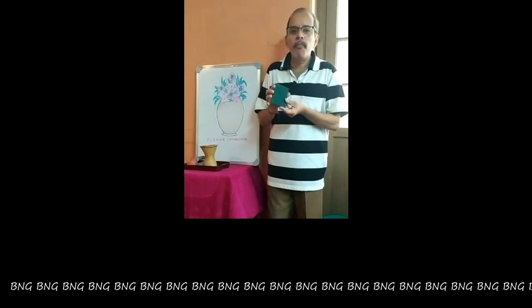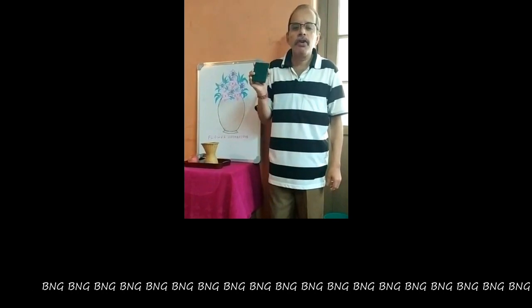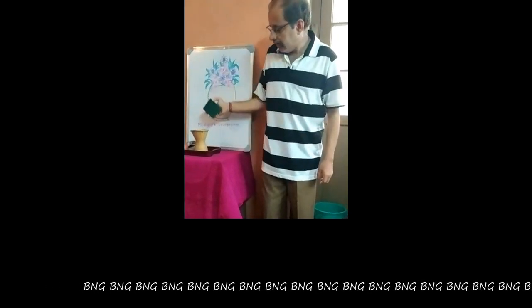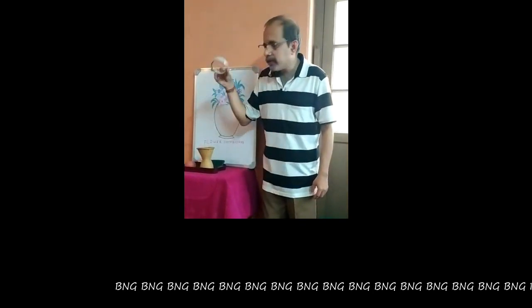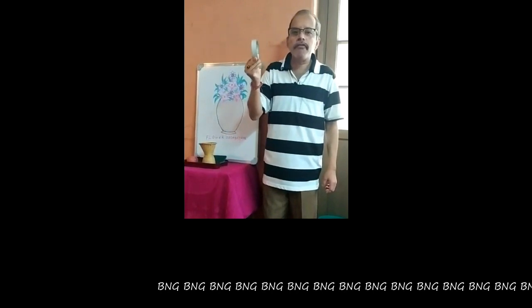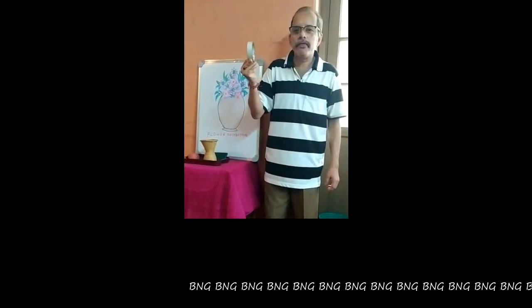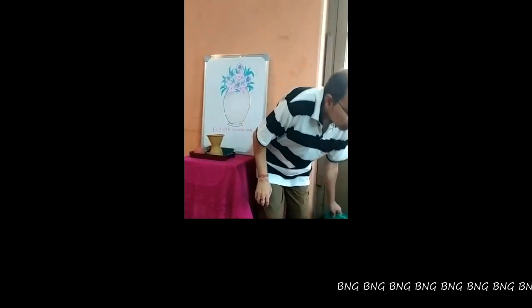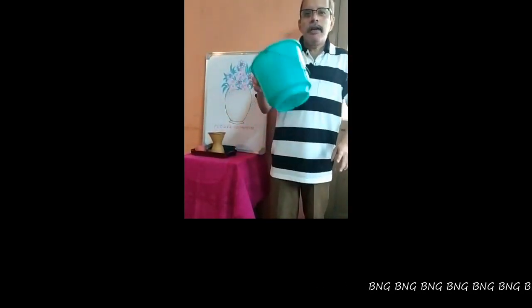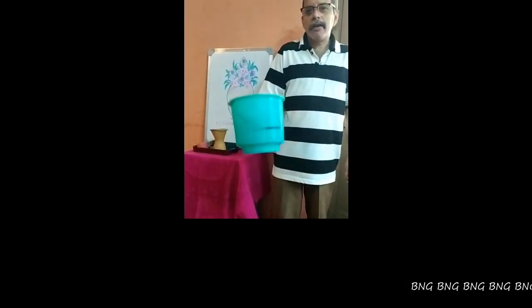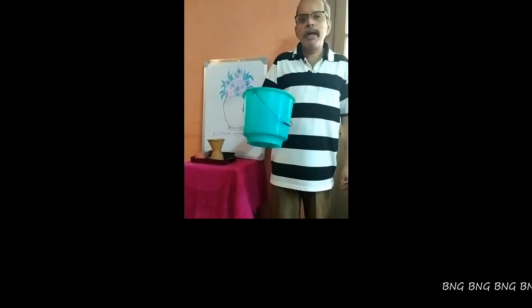Next comes the foam, which you place inside the container and into which you insert the flowers. There is also tape to join and stick flowers together. Apart from that, you use a mist spray to spray water from time to time to keep the flower arrangement fresh. You also have a bucket for picking flowers from the garden or for keeping water. These are the various equipment used for flower arrangements.